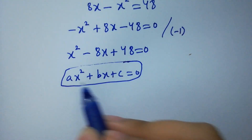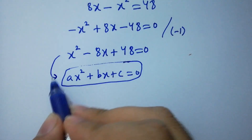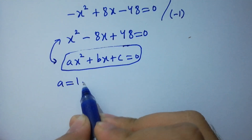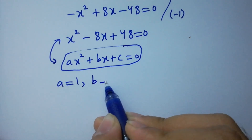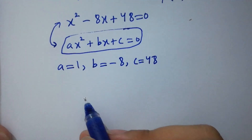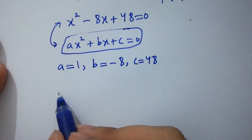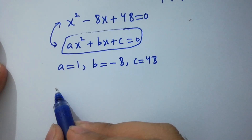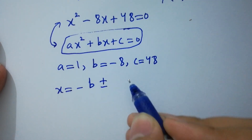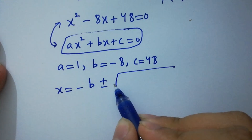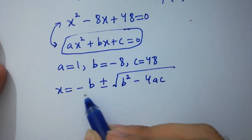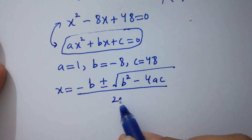By comparing, we have a equal to 1, b equal to minus 8, and c equal to 48. Applying the quadratic formula: x equal to minus b plus or minus square root of b squared minus 4ac, all over 2a.